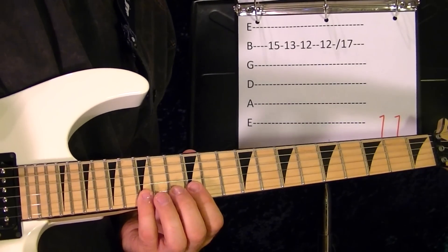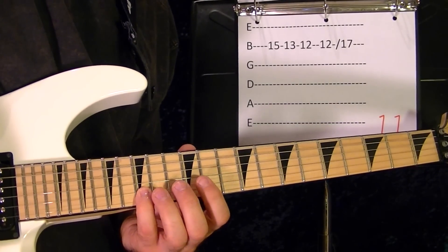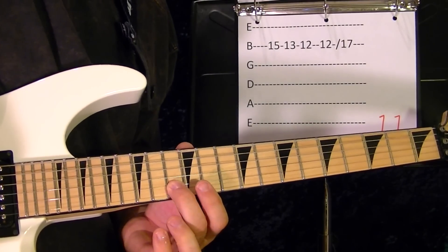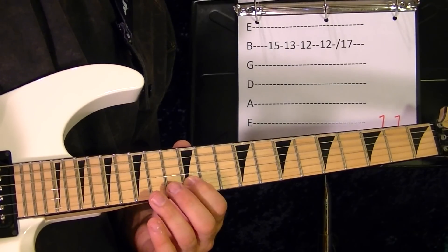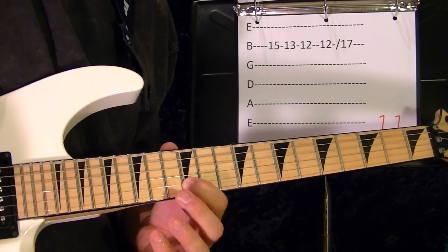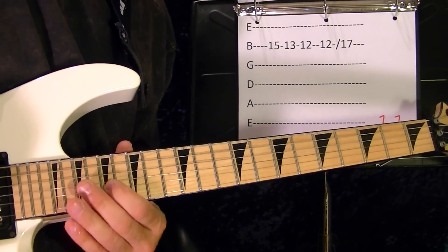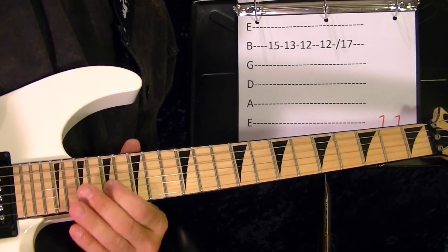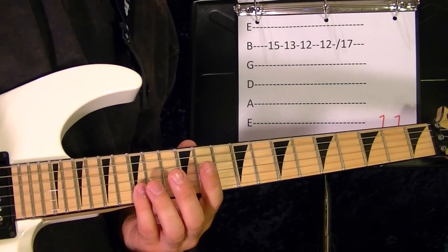Okay, the last riff: second string fifteenth, thirteenth, twelfth, twelfth again slide up to seventeenth. You can speed pick it.